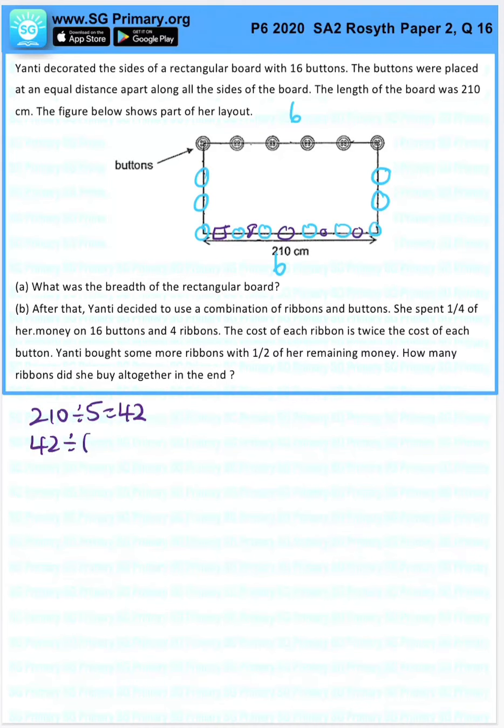42 divided by 6 is 7cm, which means 1 diameter is 7cm. So the total amount that makes up 210 is 5 buttons plus 5 intervals. So 7 times 5, because 5 buttons.